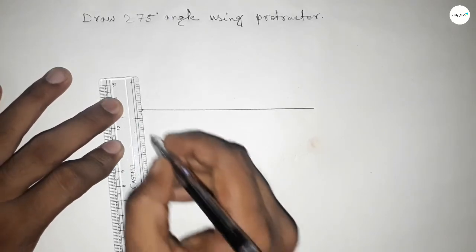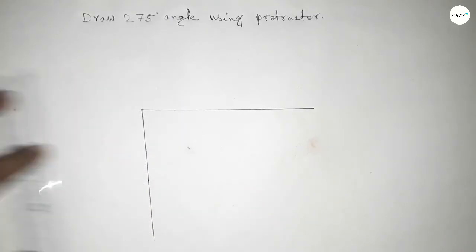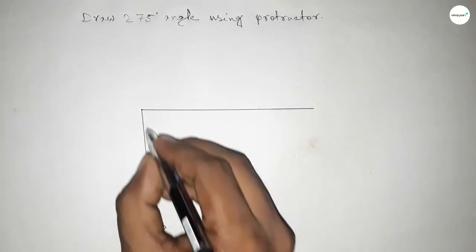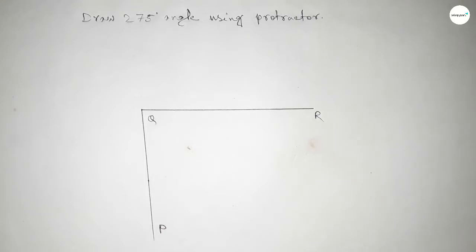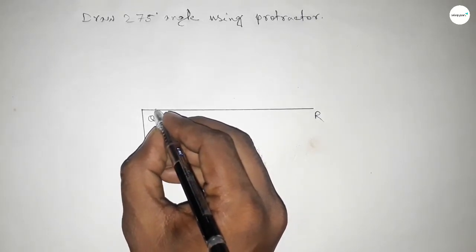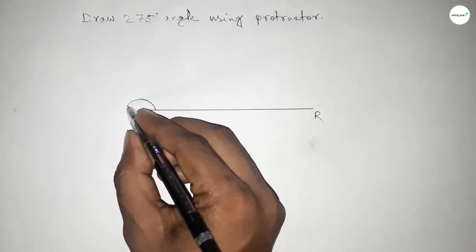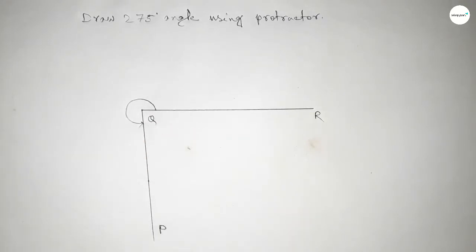So now joining this to get 275 degree angle. So this is P, Q, and R. So angle PQR.